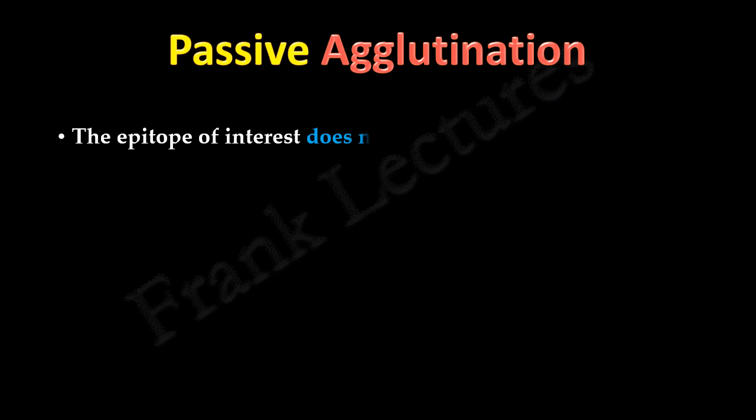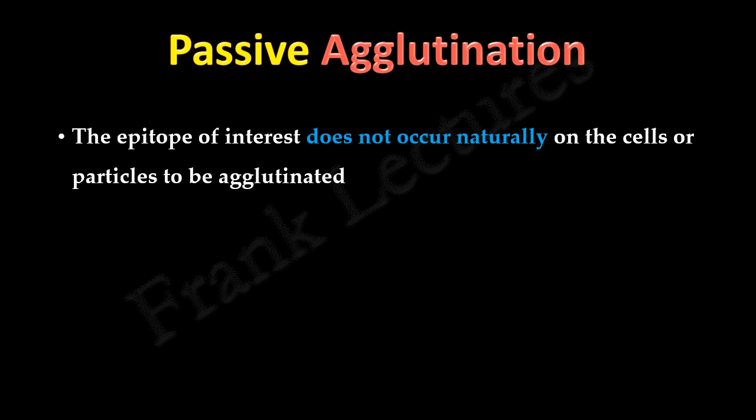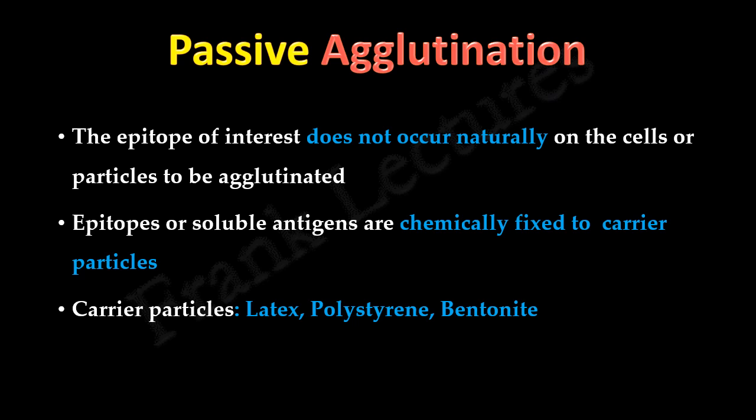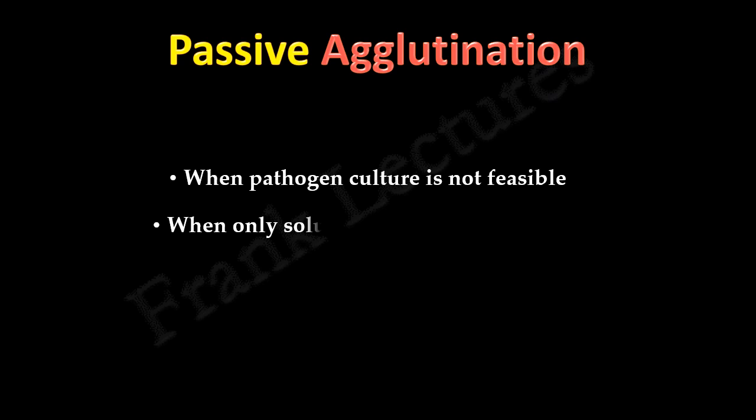In passive agglutination, the epitope of interest does not occur naturally on the cells or particles to be agglutinated. In such cases, the epitopes or soluble antigens are chemically fixed on carrier particles. Examples of carrier particles used in passive agglutination are latex, polystyrene, and bentonite. Earlier, RBCs were used, but synthetic carrier particles provide the advantage of uniformity, stability, and consistency, hence they are preferred now. The advantage of passive agglutination is that we can easily perform agglutination and interpret results in cases where pathogen culture is not feasible or only soluble antigens are available.